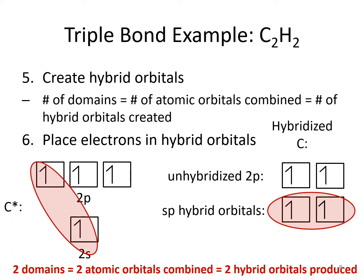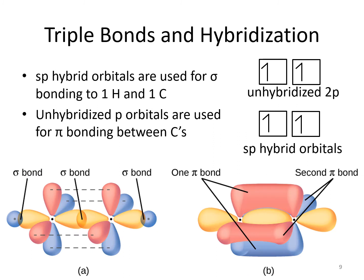We take an s and a p and make sp hybrid orbitals. There are two unhybridized p orbitals, which each have one electron. The sp hybrid orbitals are used for making sigma bonds. One sigma bond is an sp hybrid orbital from carbon overlapping with an s orbital from hydrogen. The other sigma bond is an sp hybrid orbital from one carbon overlapping with an sp hybrid orbital from the other carbon. These are sigma bonds because the overlap is along the internuclear axis.